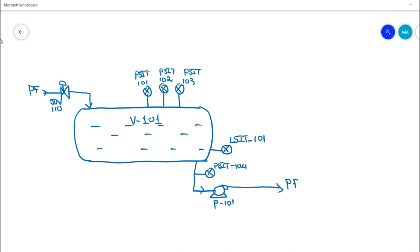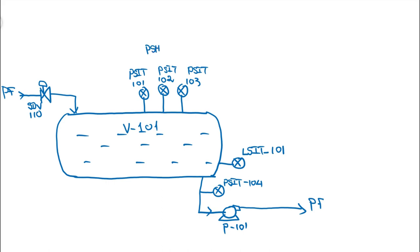The vessel tag number is V-101. For protection, we focus on the ESD tags — DCS tags for alarm and monitoring are excluded from this example. All three pressure transmitters have a high-high trip: when PSHH is initiated by PSIT-101, 102, and 103 on a two-out-of-three voting logic, it trips the main inlet SDV-110.